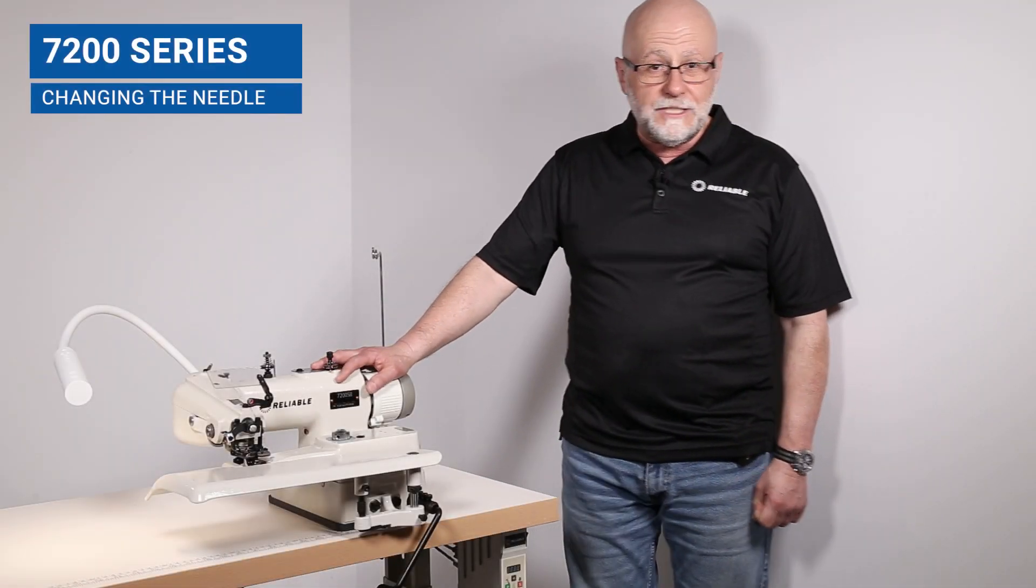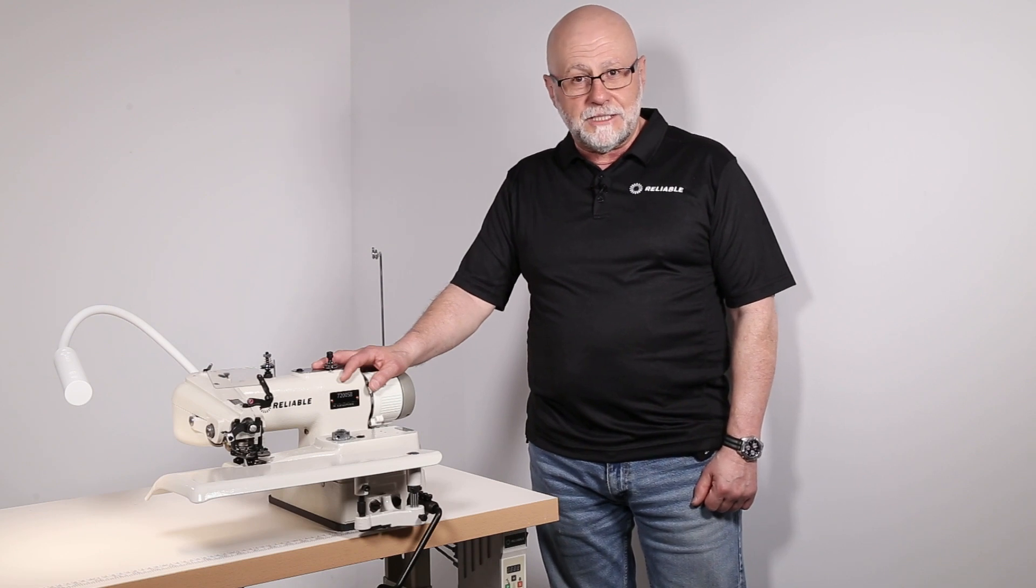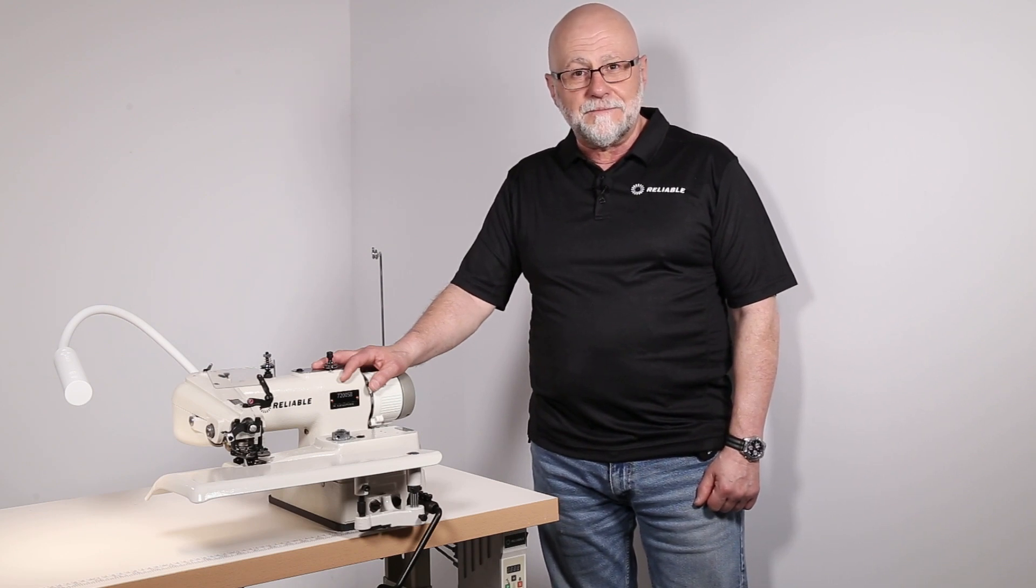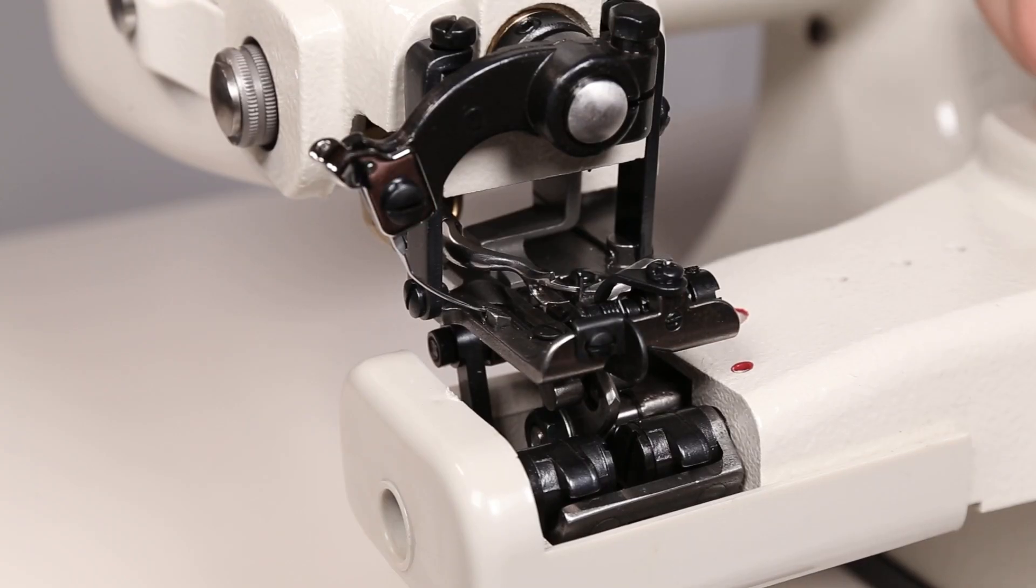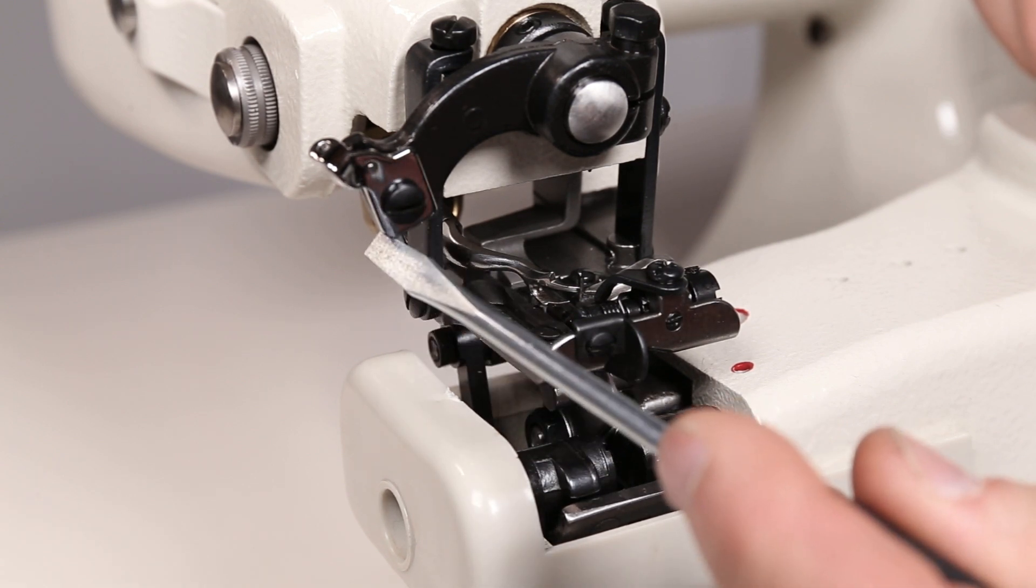Now I'm going to show you how to change the needle in the 7200 Reliable direct drive blind stitch sewing machine. When changing the needle, make sure your needle bar is in home position, which is your needle all the way up and to the left.